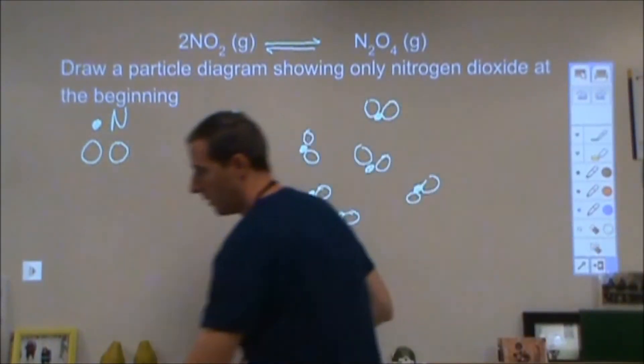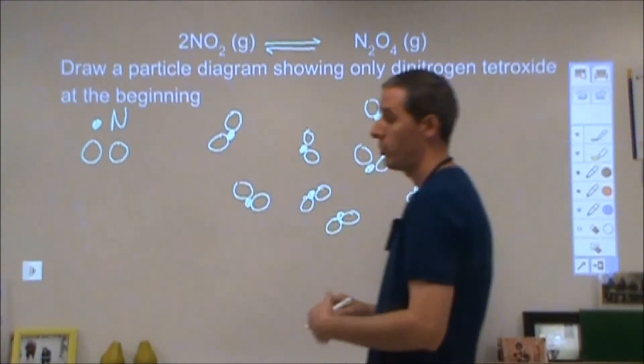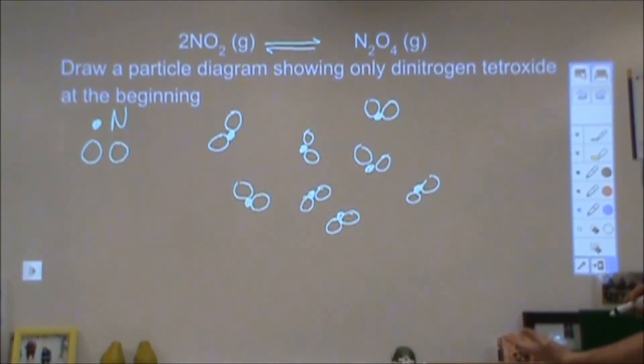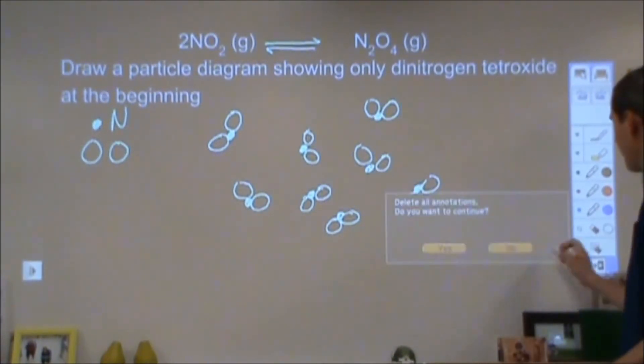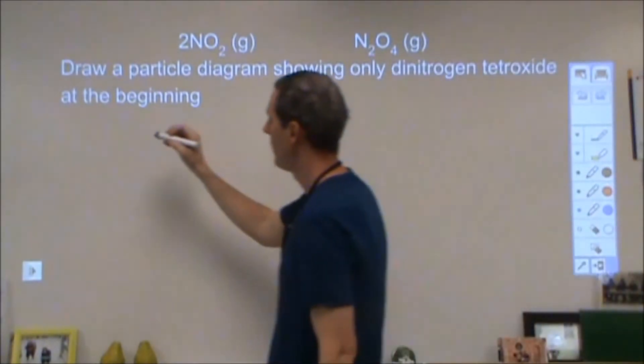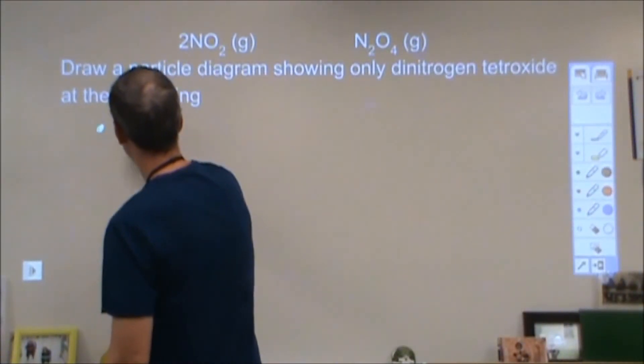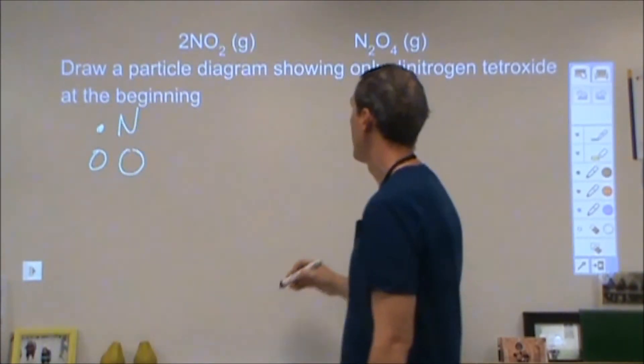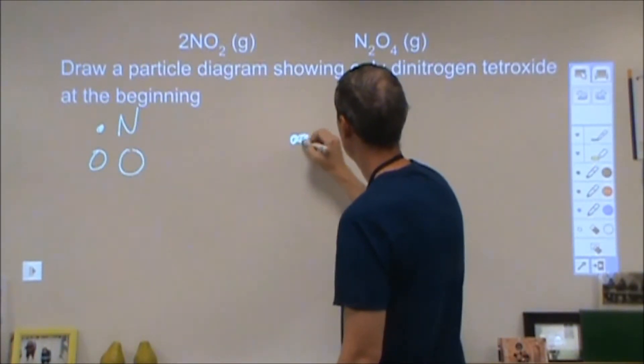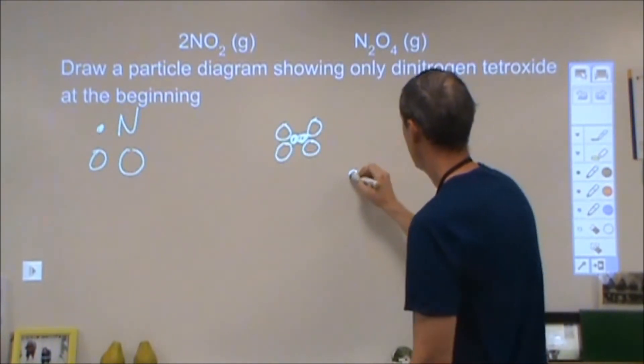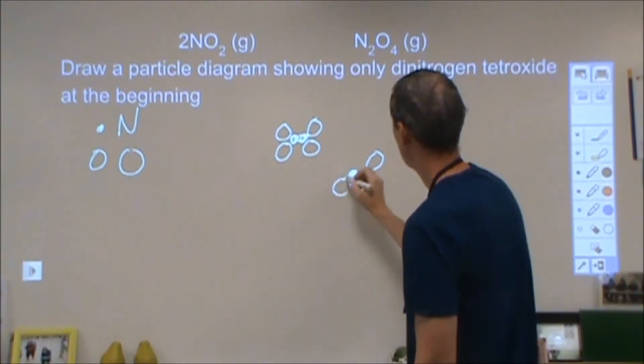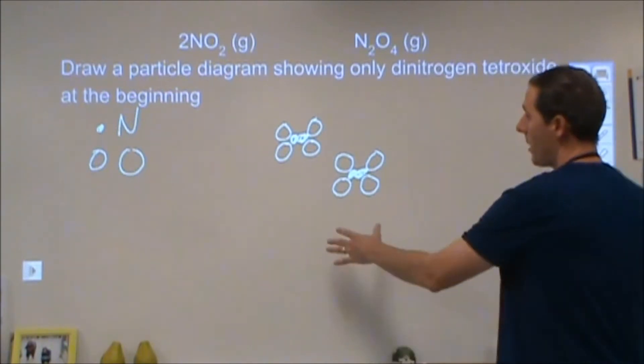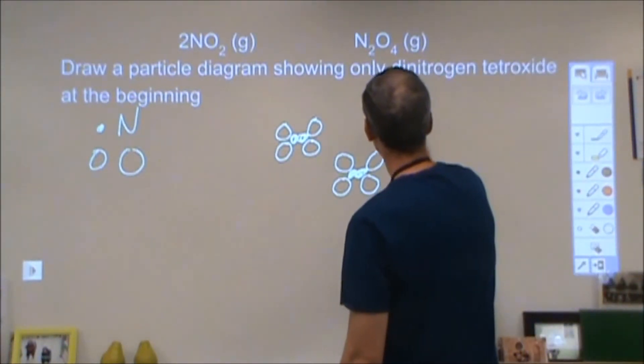The second one says draw a particle diagram showing only the dinitrogen tetroxide at the beginning. If we keep our nitrogen and oxygen, a dinitrogen tetroxide would look like this. Keeping with my scale from before, I'm going to keep the same amount of nitrogen and oxygen present at all times. So now, instead of having eight of these, I'm going to have four because I have twice the amount of material in each one.